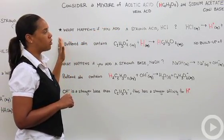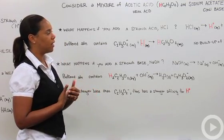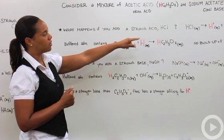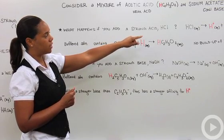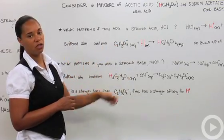Assuming we have this mixture of this weak acid acetic acid and this conjugate base sodium acetate, what happens if we add a strong acid, say HCl? A strong acid, HCl, is going to completely dissociate in solution to give you protons H+ and chlorine ions Cl-.